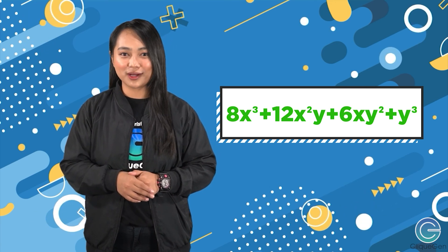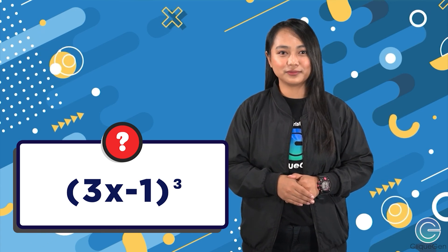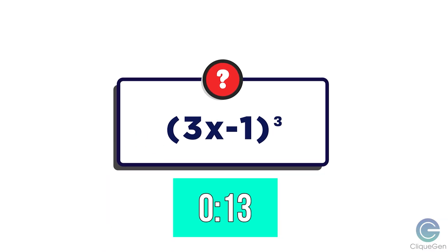Let's try another one: what is the cube of 3x minus 1? Your 15 seconds starts now. The answer is 27x cubed minus 27x squared plus 9x minus 1. And that's it for today — I hope you learned something new. Thank you for listening and see you again in my next video. This is Teacher Becca for Click Chain.